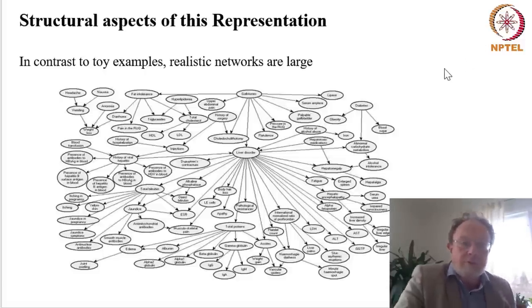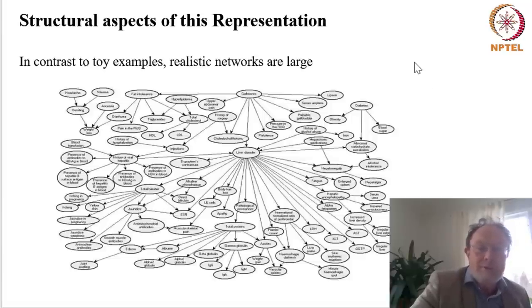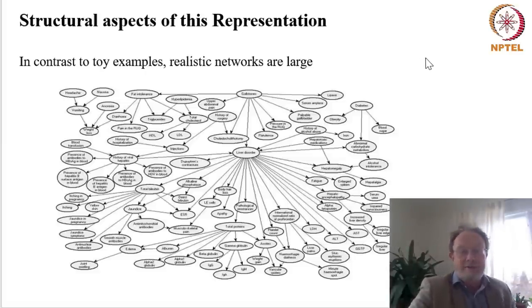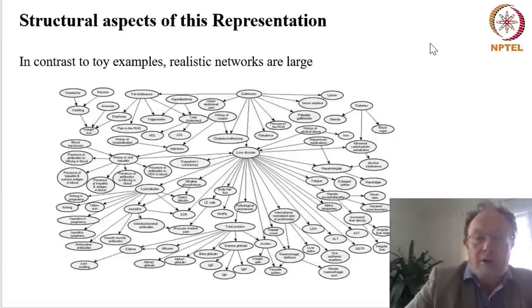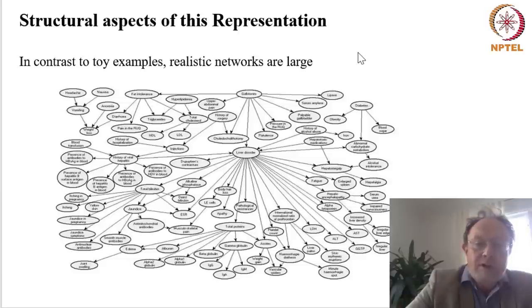The examples shown so far are small and serve to illustrate the principles. However, in realistic cases, these kinds of networks can be large and very huge. Due to the properties of Bayesian networks — particularly conditional independence — they remain scalable and manageable, but the realistic example shown on this slide is more representative of what you would face in practice.